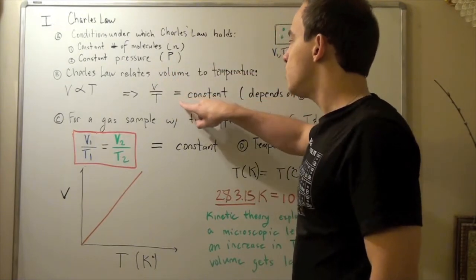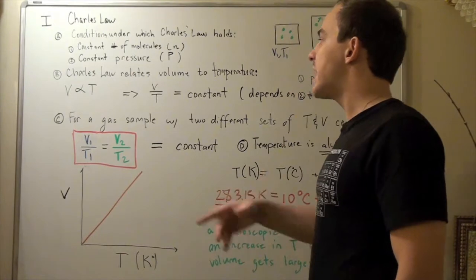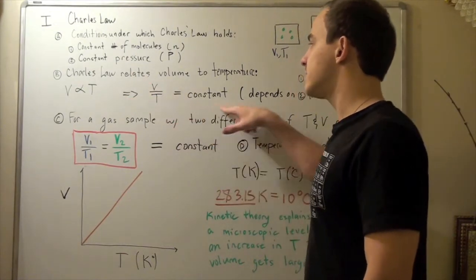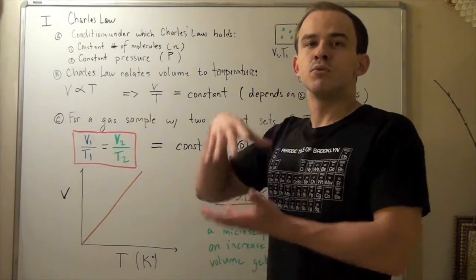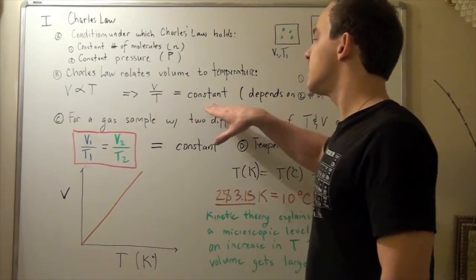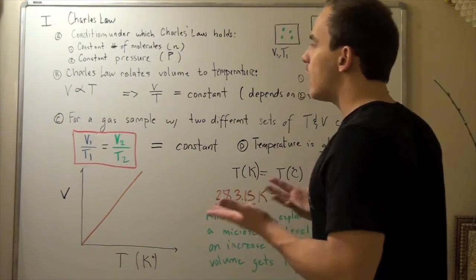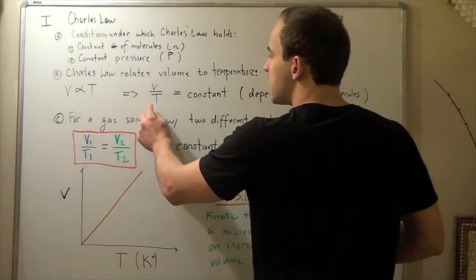Remember, in Boyle's Law, we saw that P times V gave us a constant, and that if we increase pressure, our volume must decrease while keeping the constant the same. In this case, we have the same kind of situation, except now we have volume divided by temperature.